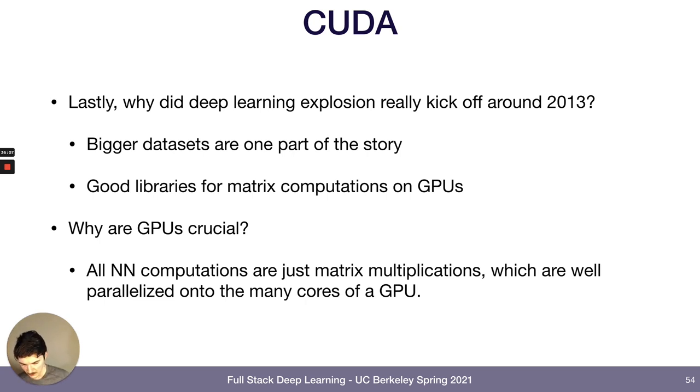But with this CUDA library being released by NVIDIA, you could use that graphical processing unit to just do general matrix computations, which was very applicable to a lot of scientific computing, including deep learning. And the reason it's so crucial for deep learning is because all the computations in neural networks, all the computations that we've seen are just matrix multiplications. And matrix multiplications are easy to parallelize over the computational cores of a GPU.